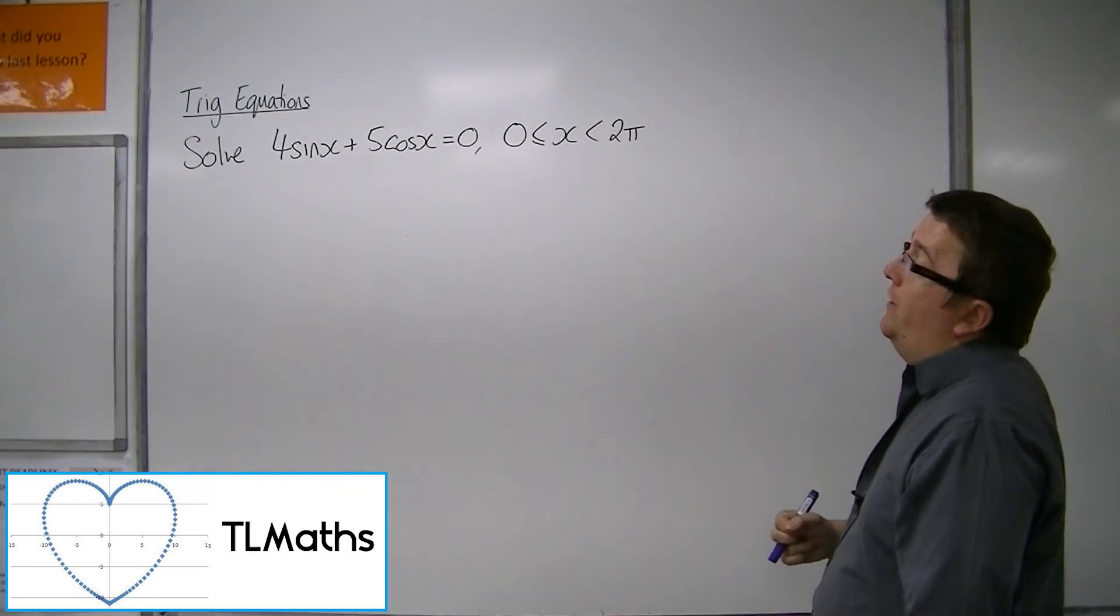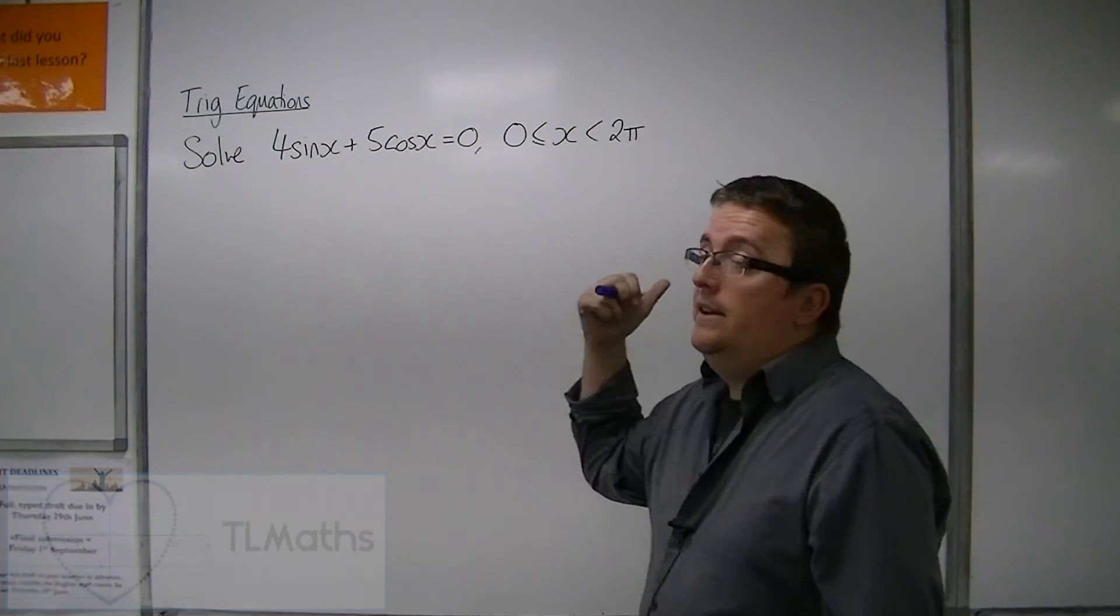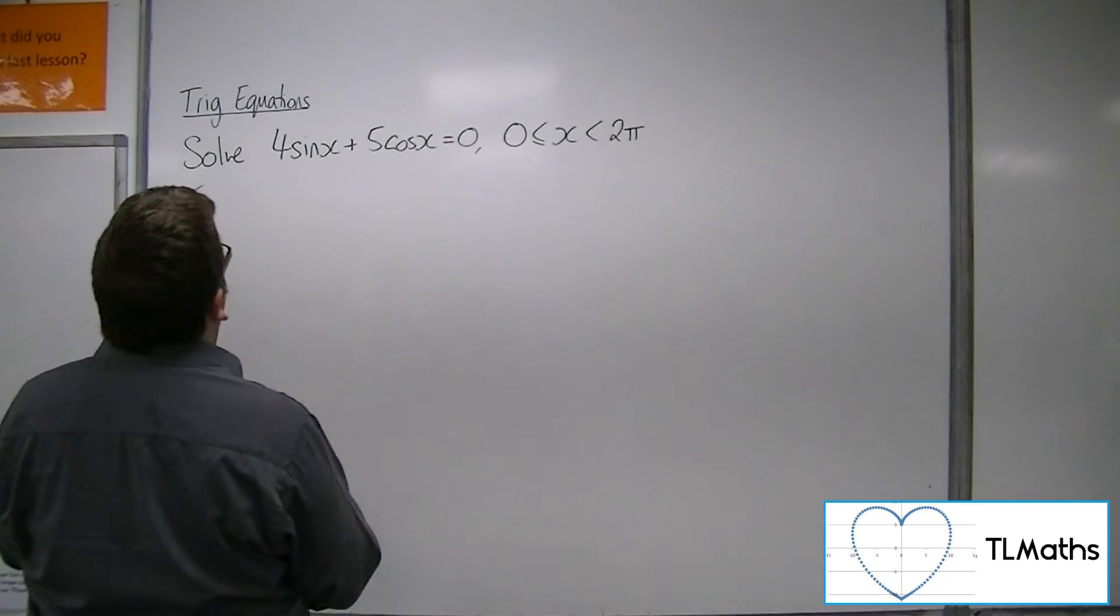Let's say I want to solve 4sin(x) + 5cos(x) = 0, between 0 and 2π radians.